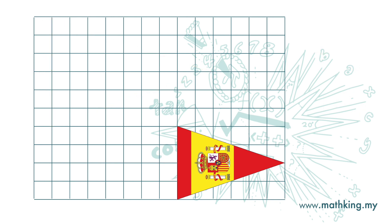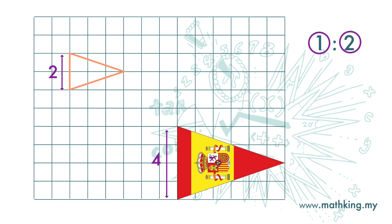Let's look at the scale again. The scale here is 1 to 2. The 1 here is 1 unit of the drawing, and the 2 represents 2 units of the actual object. So the object is 2 times longer than the drawing, which means the drawing is smaller than the actual object.